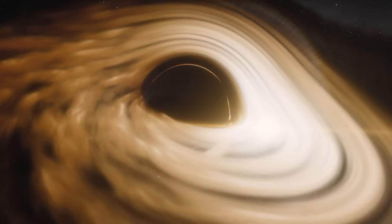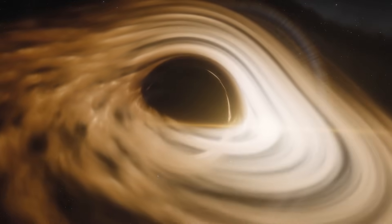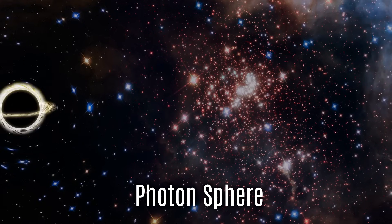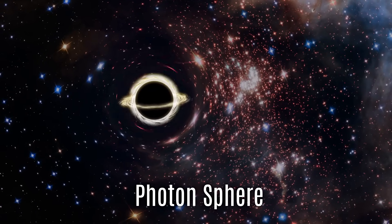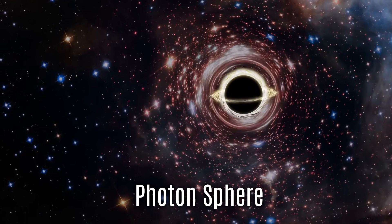Deeper inside a black hole, things get even stranger. The photon sphere, the second layer, is where light itself becomes trapped in an endless orbit around the black hole.